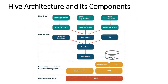The components used in the Hive architecture are: Hive client, Hive services, the processing framework, resource management, and distributed storage. This architecture shows the flow in which a query is submitted to Hive and how it is processed using the MapReduce framework. Hive clients support Hive applications written in many languages — Hive client applications are supported through Thrift, JDBC, and ODBC drivers.